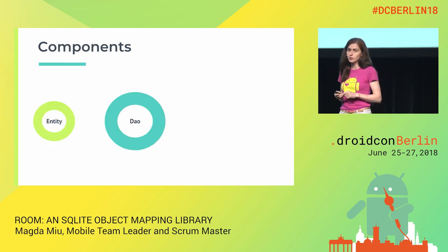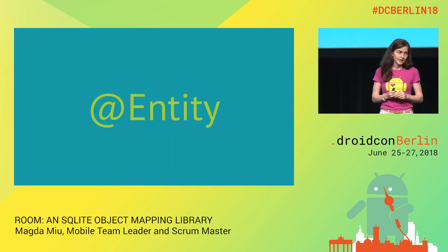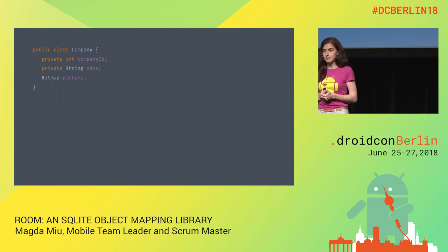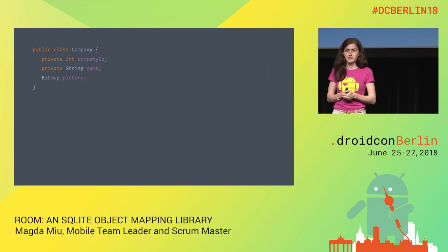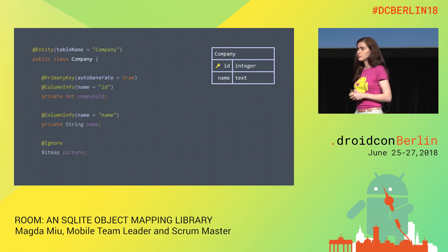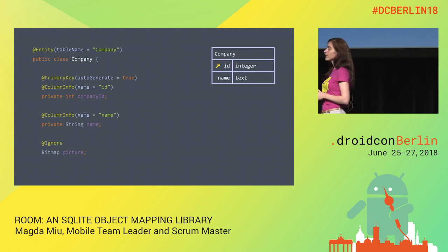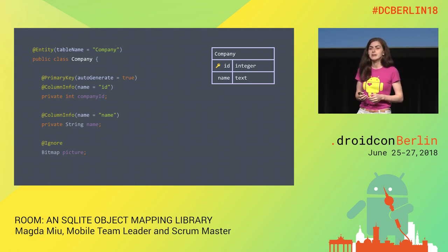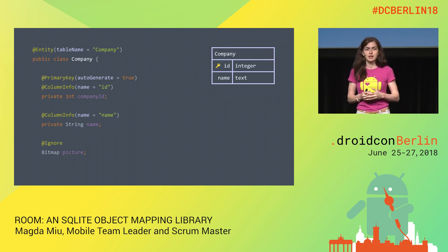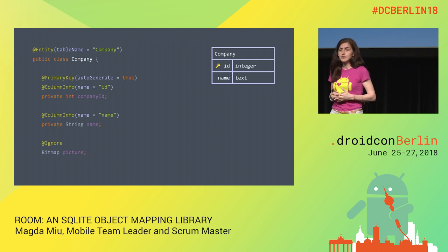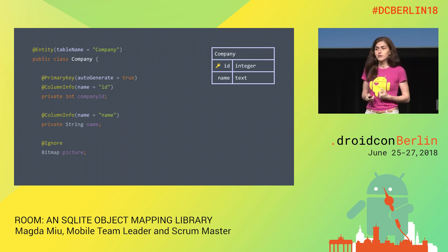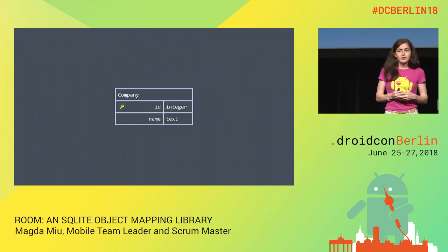We have three component types: Entity, Data Access Object, and the Database. Let's start with Entity. Say we have a Company class with three fields: company ID, name, and picture. We want to save only the ID and name in the database, so the table has those two fields with ID as the primary key. In Room, we annotate the class with @Entity, specify the table name, use @ColumnInfo for field names, @PrimaryKey for the ID, and @Ignore for the picture field.